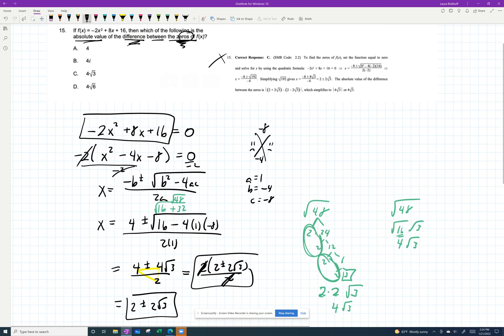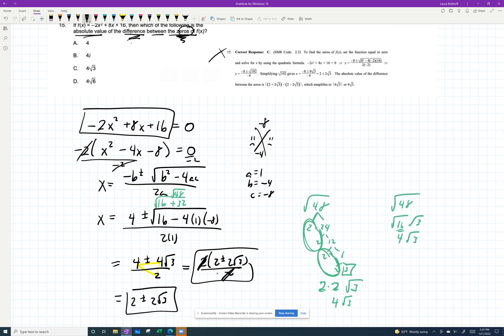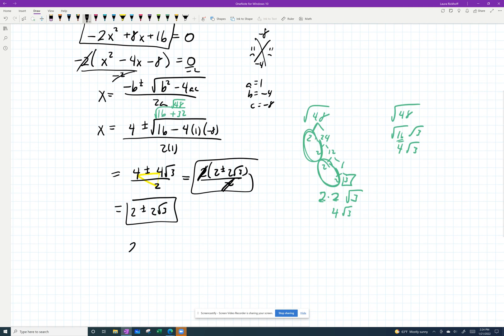And so, of course, they didn't just want the zeros, they wanted the absolute value of the difference of the zeros. So the difference, we're going to subtract them. So we have two roots: 2 plus 2 root 3, and the other one is 2 minus 2 root 3. The difference of those, we will subtract them.